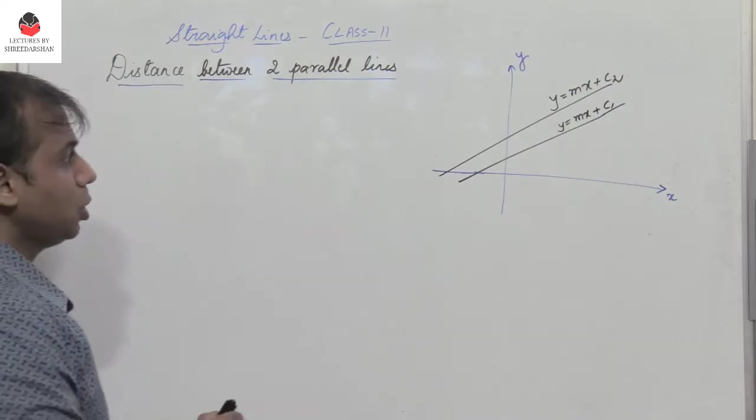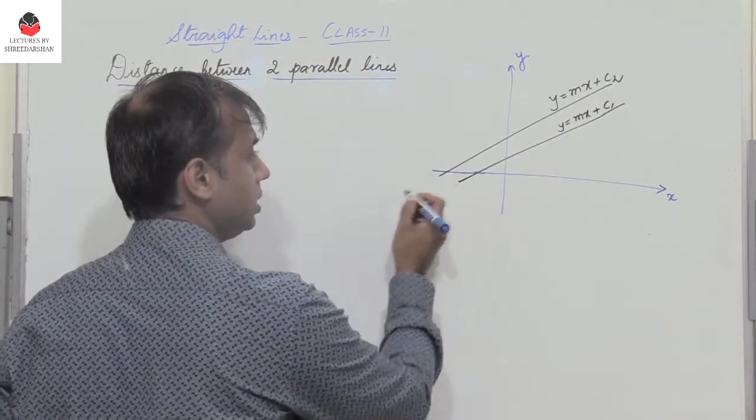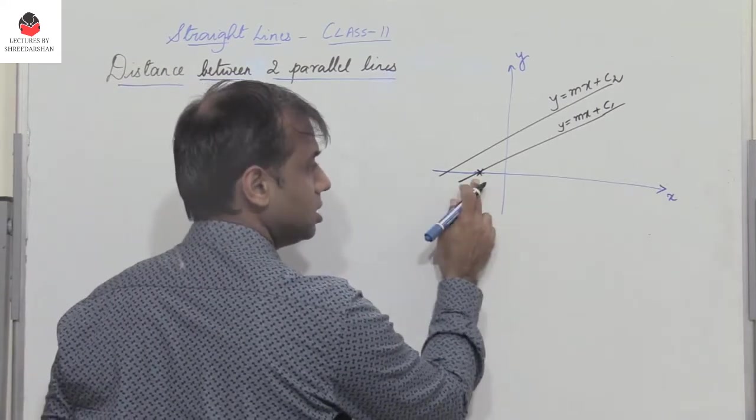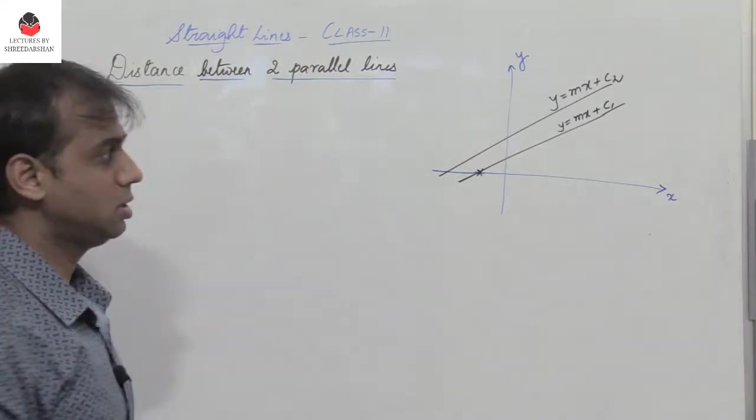Now you have the first line l1 intersecting the x-axis at this point. So what is this point? At this point the y value is 0. So let's find.